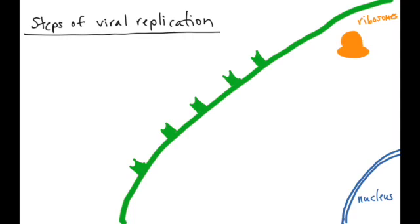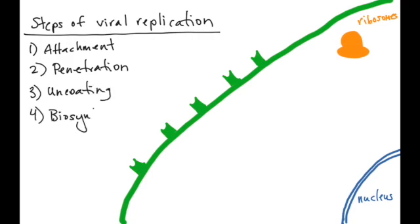For an animal virus, there's really six steps of viral replication: attachment, penetration, uncoating, biosynthesis, assembly, and egress, or getting out of the cell. Let's take these in order.